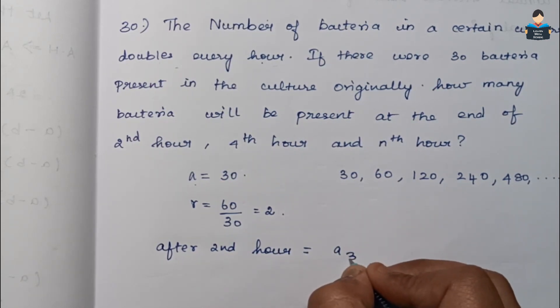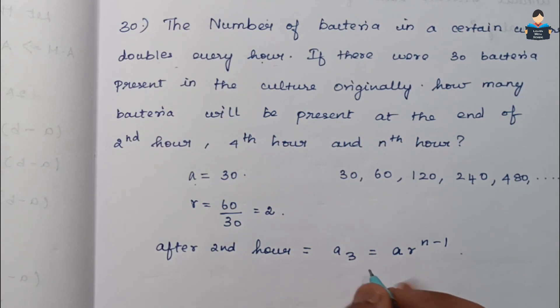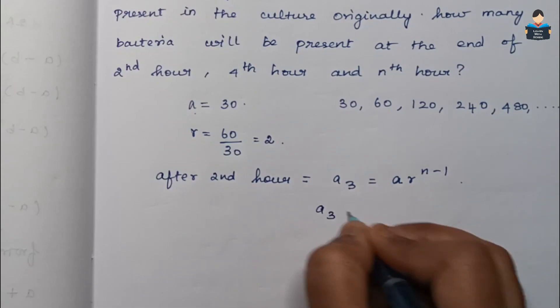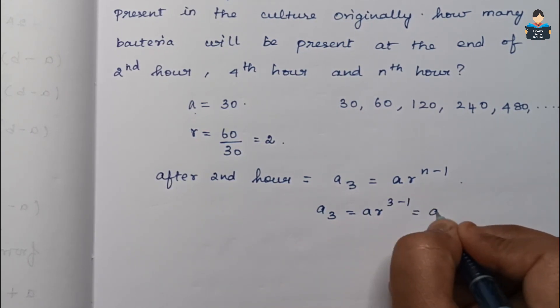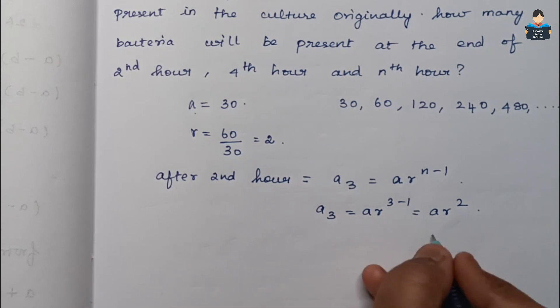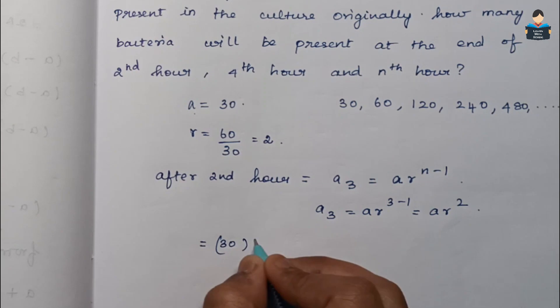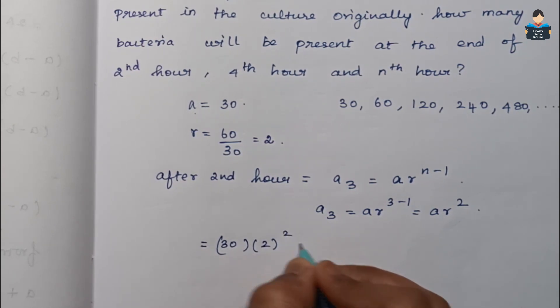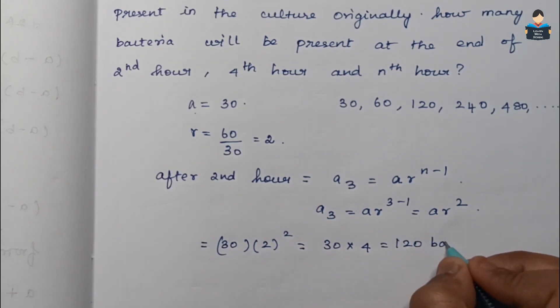After second hour equals a3. The formula is a times r to the power n minus 1. So for a3, we get a3 equals a times r squared. Substituting values: 30 times 2 squared, which is 30 times 4, equals 120 bacteria.